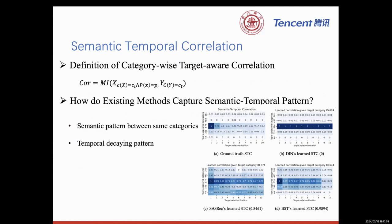We hypothesize that there should be both semantic and temporal correlation between behaviors and the target. We measure such correlation by mutual information and do observe that there is a strong semantic as well as temporal correlation, indicated by the third row of the first figure. We investigate several popular user interest models, including DRN, SASREC, and BST, but none of them can capture such pattern.